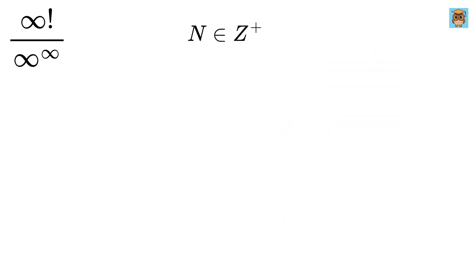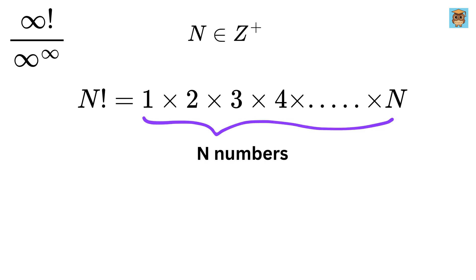For some positive integer n, we can write n factorial as 1 multiplied by 2, multiplied by 3, multiplied by 4, and so on up to n. So, these are n numbers.